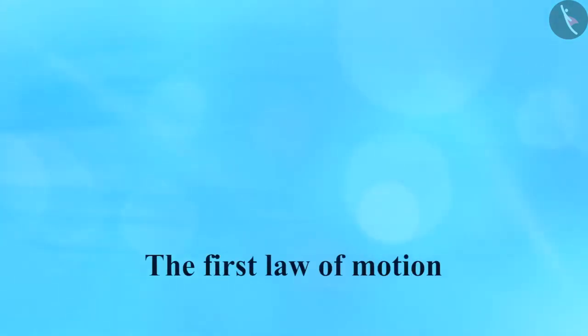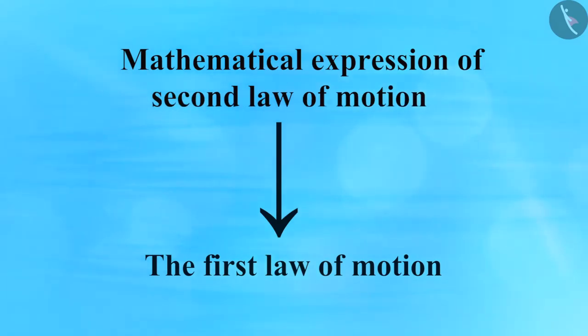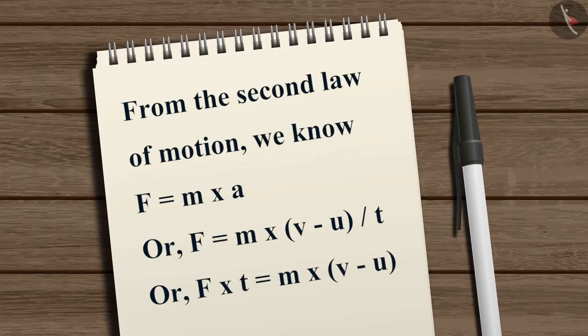It is interesting to note that the first law of motion can be mathematically stated from the mathematical expression of the second law of motion. From the second law of motion we know F equals m multiplied by a, or F equals m multiplied by (v minus u) divided by t, which can be written as F multiplied by t equals m multiplied by (v minus u).